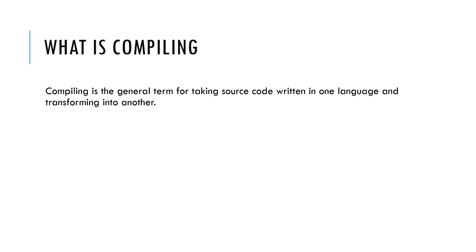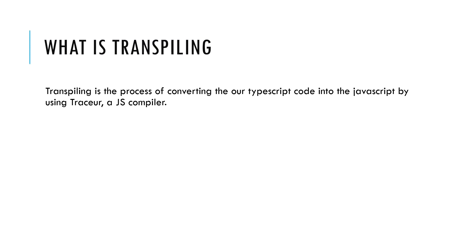So what is compiling? Compiling is the general term for taking source code written in one language and transforming it into another. So what is transpiling? Transpiling is the process of converting TypeScript code into JavaScript using the TypeScript or JS compiler.